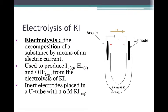Another reason you might use an electrolytic cell is for electrolysis. Electrolysis is the decomposition of a substance by means of an electric current. So it can be used to produce iodine gas, or hydrogen gas, and aqueous hydroxide ions from the electrolysis of potassium iodide.